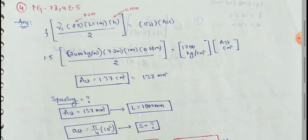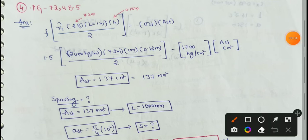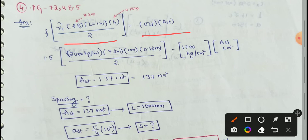What we will discuss in this video: first we have given data — we have tie bars. The formula is: frictional force equal to resisting force.